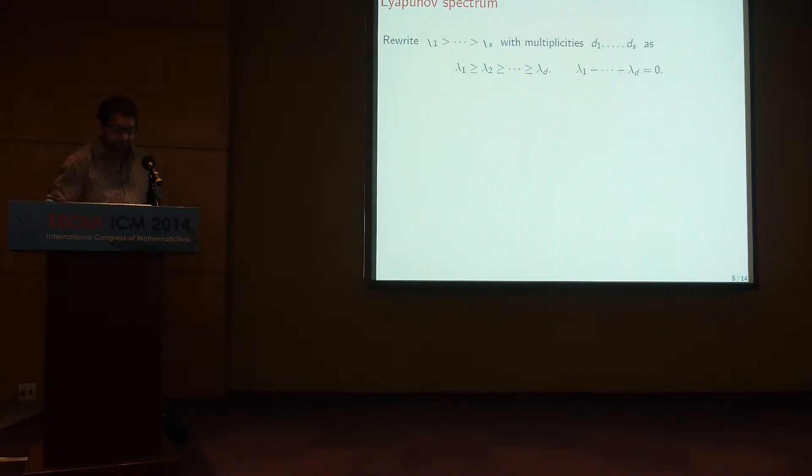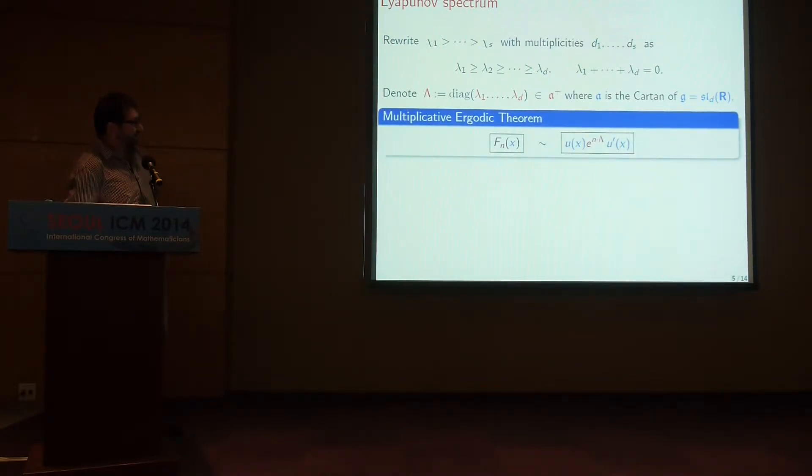One can rearrange this information in what is usually called Lyapunov exponents. You write the chi's with their multiplicities and call them lambdas. Then we can write this as a diagonal matrix, lambda 1 to lambda d. And it lies in the positive Weyl chamber of the Cartan subalgebra of SL(d,R). One can rephrase the multiplicative ergodic theorem as saying that f_n(x) behaves in the group SL(n,R) like this expression where these are rotating factors. They can be taken from the compact subgroup. But what's important is the dependence on n. The dependence on n comes from e^(n·λ), the exponential of this. So this is the asymptotic. If lambda is non-zero, if not everything vanishes, then you actually have some growth, exponential growth, and you are following a geodesic of certain type and the type of the geodesic is determined by lambda.